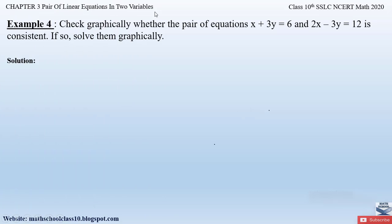The problem says: check graphically whether the pair of equations x + 3y = 6 and 2x − 3y = 12 is consistent; if so, solve them graphically. So here they have given us two pairs of linear equations and we have to check whether these are consistent or not, and if they are consistent, solve them graphically.